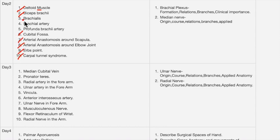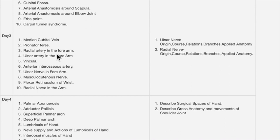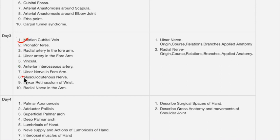For day three, essay questions cover the ulnar nerve and radial nerve. All the short answer questions are important — don't forget to prepare the median nerve. Musculocutaneous nerve is a very important question. Also study the radial nerve, which will be covered under that topic in the arm. Both flexor and extensor retinaculum are important.